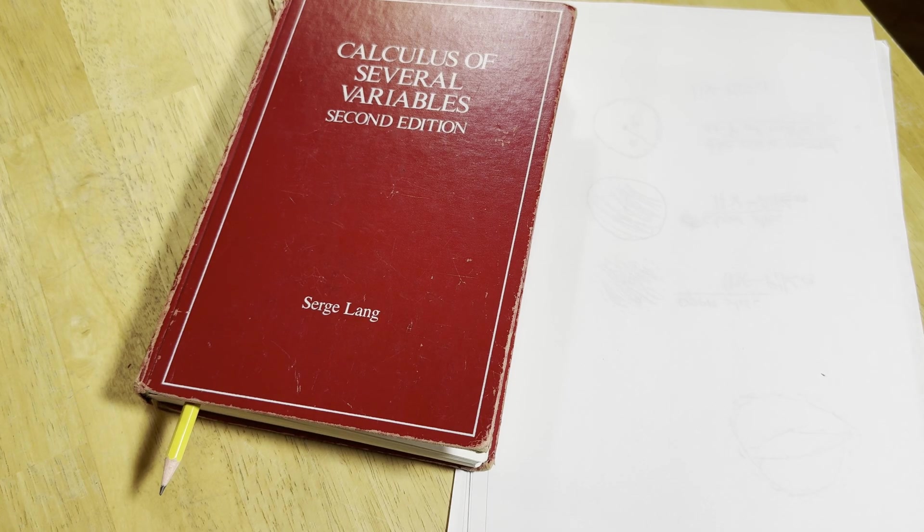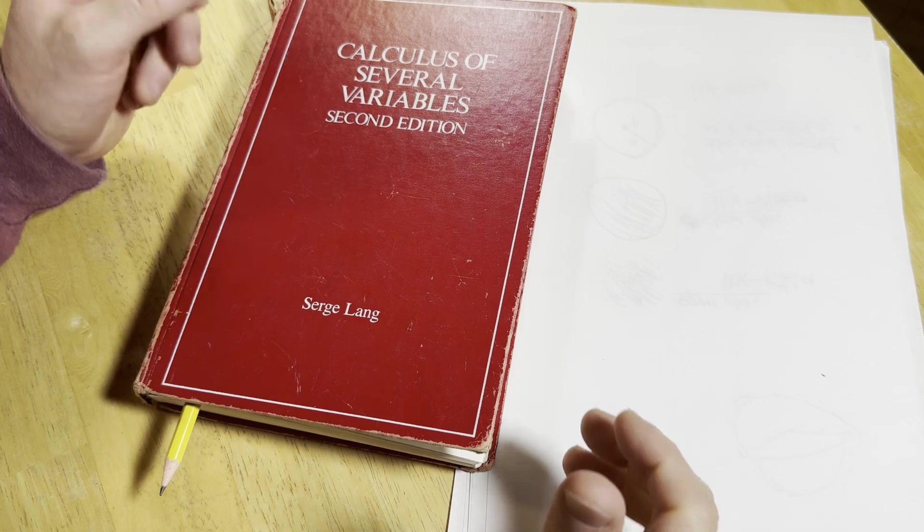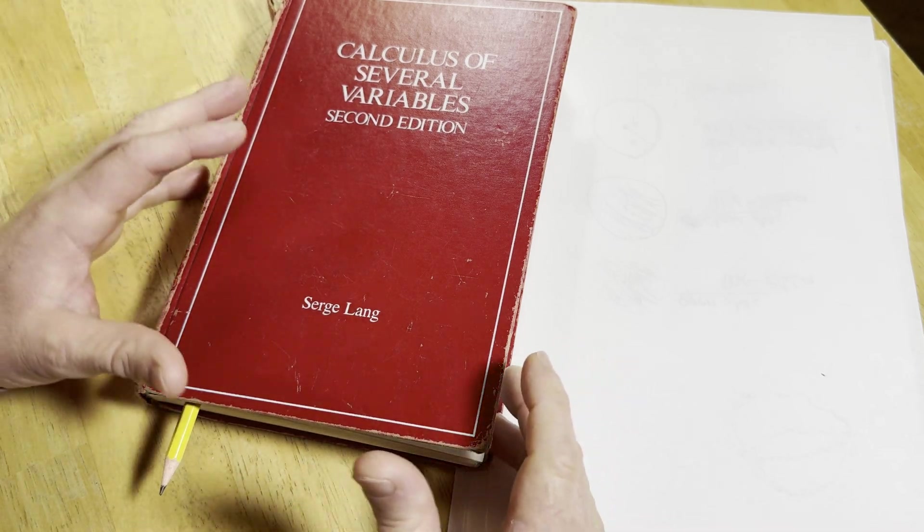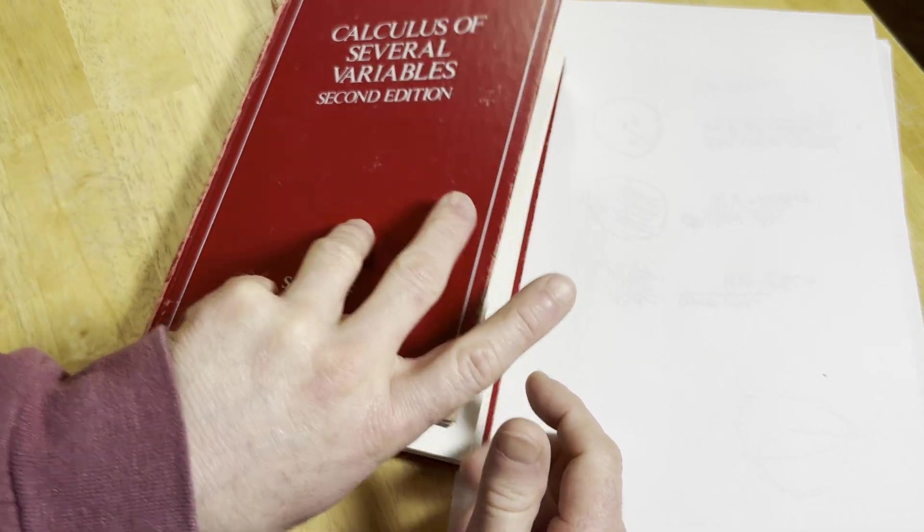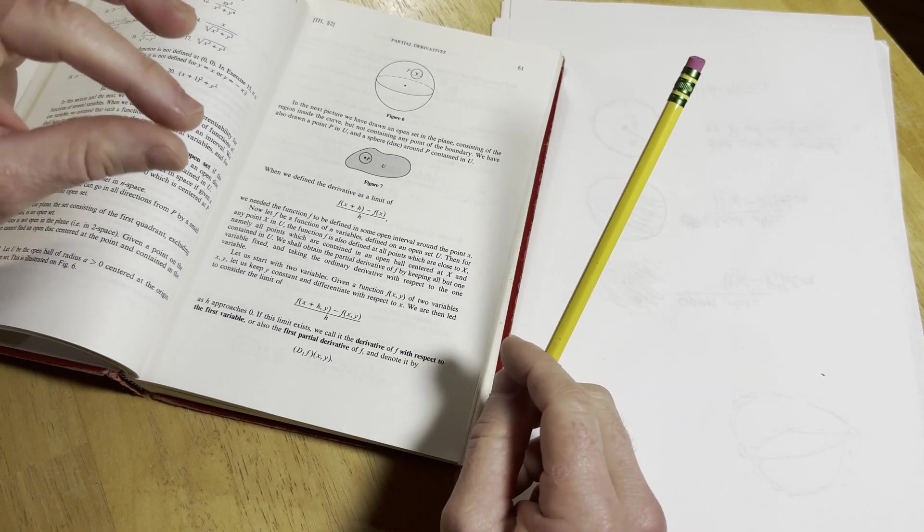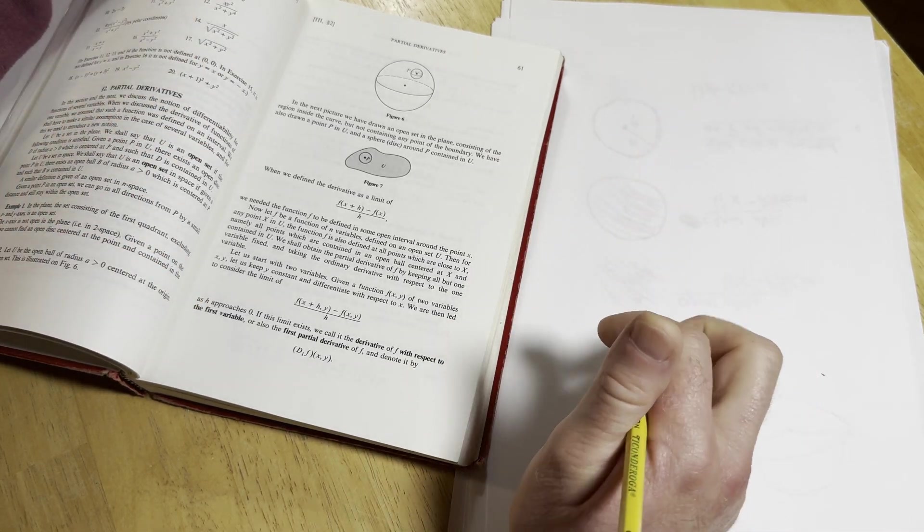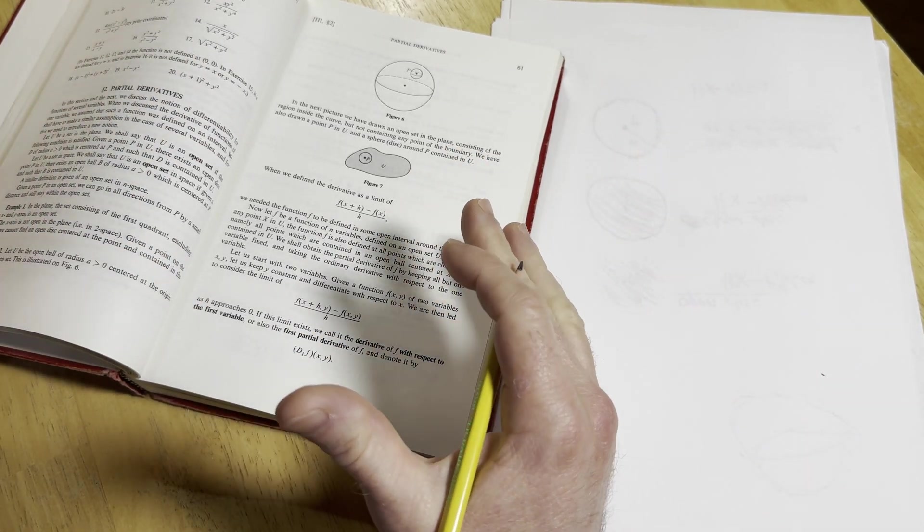Hi everyone. In this video we are going to look at some mathematics from this wonderful book Calculus of Several Variables by Serge Lang. We're going to just take a little snippet of mathematics and do an example from the book.